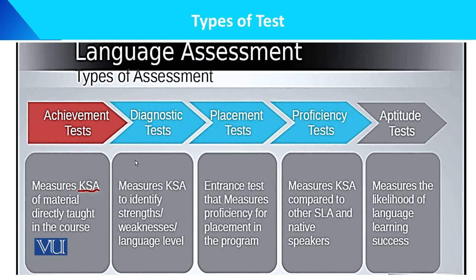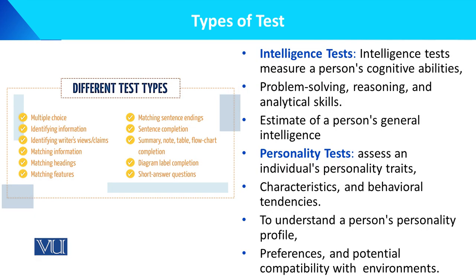Aptitude test measures the likelihood of language learning success. Intelligence test measures a person's cognitive abilities, problem-solving skills, reasoning, and analytical skills to estimate general intelligence — Alfred Binet's test is used for this, along with many other intelligence tests. Personality test assesses an individual's personality traits, characteristics, and behavioral tendencies to understand a person's personality profile — whether they are introvert, extrovert — and their preferences and potential capability in the environment.